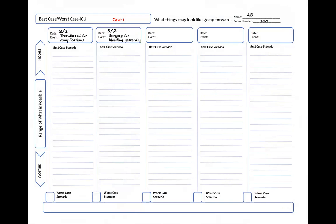On 8-2, I write 'surgery for bleeding' yesterday because that was a major event. I'm placing the star on the middle of the line because there's a fair amount of uncertainty here. Her story could go either way at this point. Next, I write a few notes around the star about what it will look like if things go as best we were hoping.